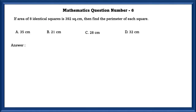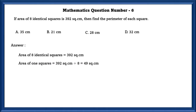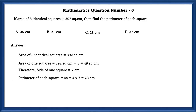Mathematics question number 6. If the area of 8 identical squares is 392 square centimeters, find the perimeter of each square. Area of 1 square is 392 ÷ 8 = 49 square centimeters. Therefore, the side of 1 square is equal to 7, since 7 × 7 = 49. Perimeter of each square is 4a = 4 × 7 = 28 centimeters. Here, a is the side of the square.